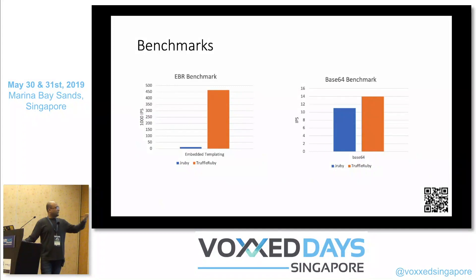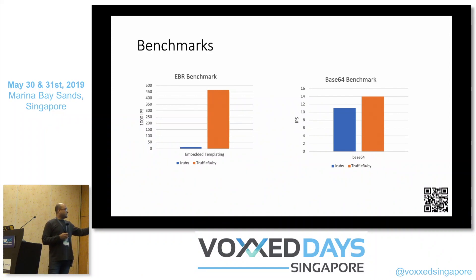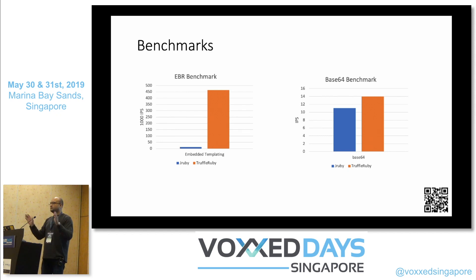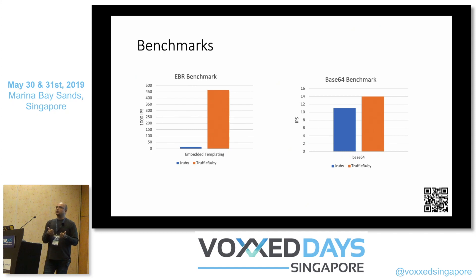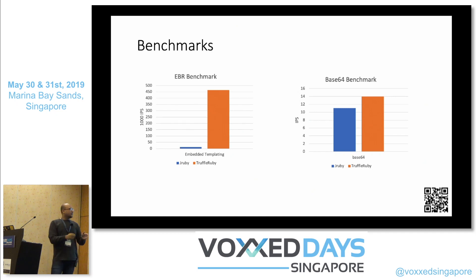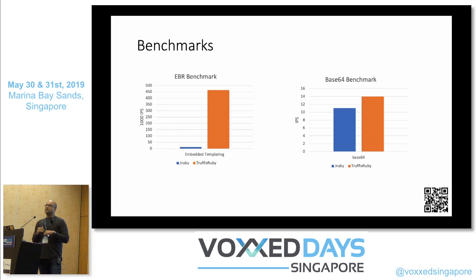The first test I did is embedded templating — comparing JRuby and TruffleRuby with the measurement criteria of IPS (instructions per second). TruffleRuby wins hands down; the performance is really, really good. First round goes to Graal. The second test is Base64: I took a really big string and did encoding and decoding in a loop of 1000. JRuby was kind of on par, but TruffleRuby still wins. Two rounds to Graal.